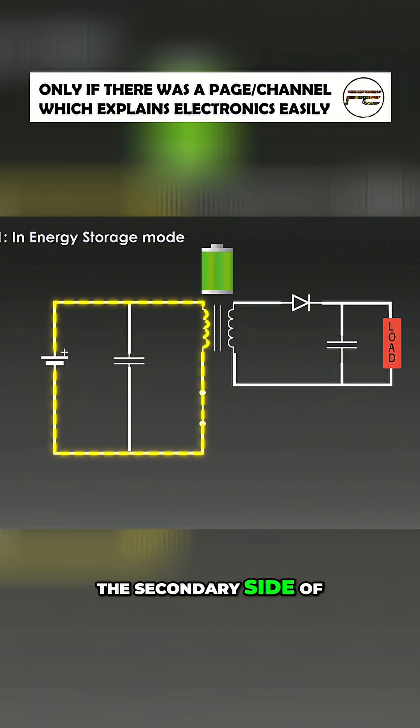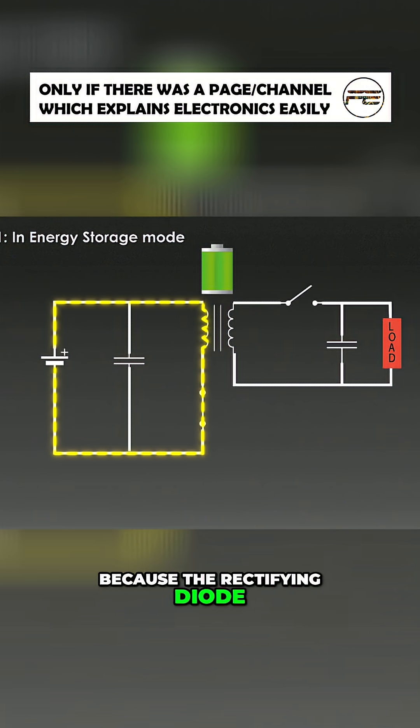During this phase, the secondary side of the transformer is disconnected because the rectifying diode is reverse biased. Hence, no energy flows to the load.